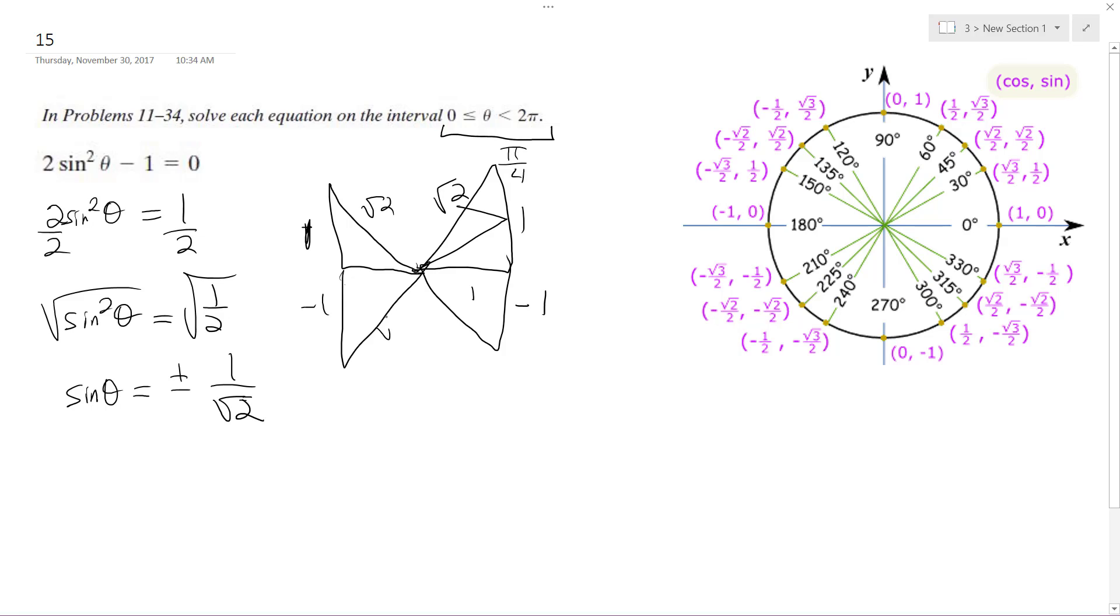Negative 1, negative 1, root 2, root 2. Hypotenuse is just an absolute magnitude.